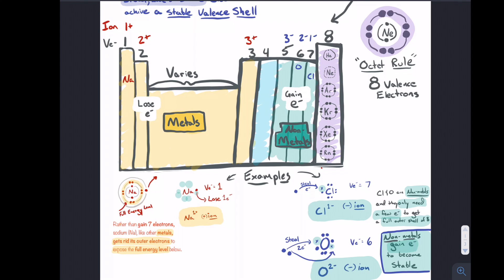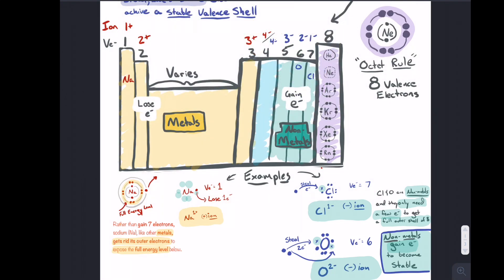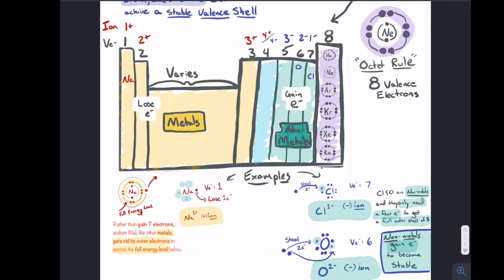This is where it gets a little bit weird when you get to group four there. Well what do they do? Well they can do either or, they can either lose or they can gain, it doesn't much matter which one it is. The elements in group 14 sometimes gain, sometimes lose, depending on what they bond with.